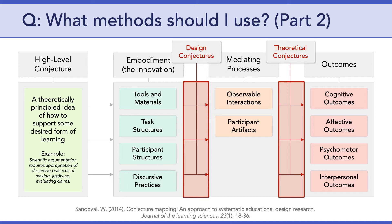The design conjectures draw on theory to explain why the embodied innovation you're proposing has a reasonable chance of producing the specified mediating processes. Likewise, the theoretical conjectures should draw on theory to explain why those mediating processes have a reasonable chance of producing your target outcomes. In this way, the conjecture map captures the theories and important constructs of your theoretical framework.